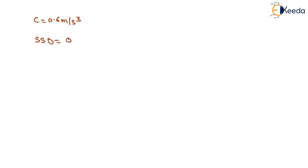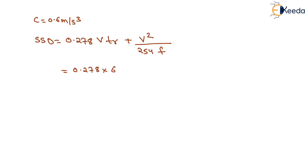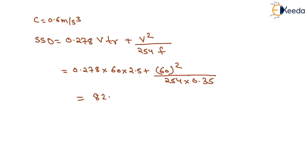Now c is given as 0.6 meter per second cube. First we need to calculate the stopping sight distance, which equals 0.278 × V × TR plus V² divided by 254F. The value of V is 60, reaction time TR equals 2.5 seconds, and F equals 0.35. On solving this we get the stopping sight distance as 82.19 meters.